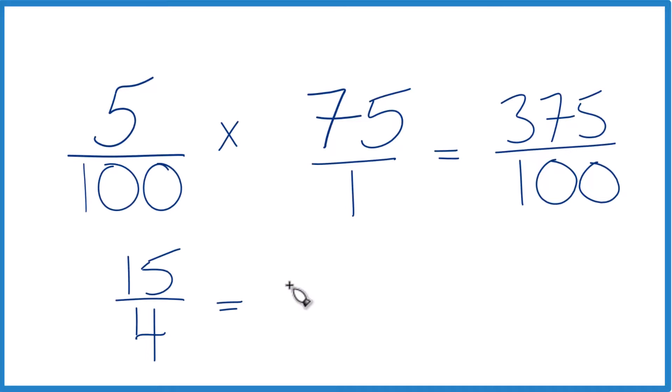4 goes into 15. 4 times 4 is 16. 4 times 3, that's 12 with 3 left over. And we'll bring the 4 across here. So 5% of 75 is 3 and 3 fourths.